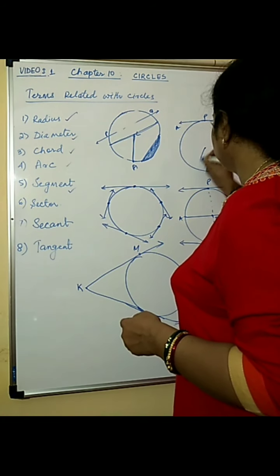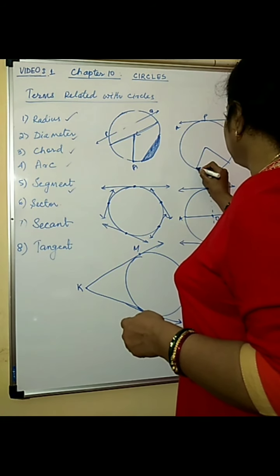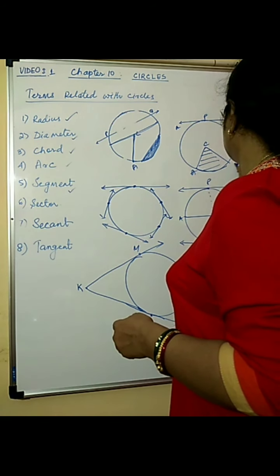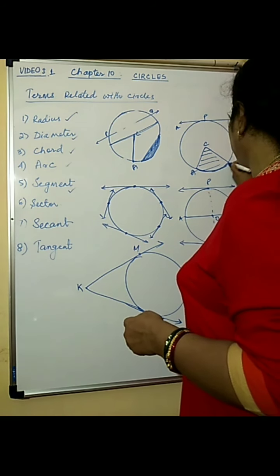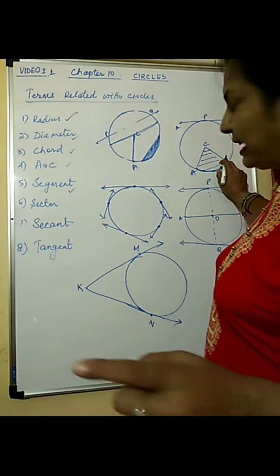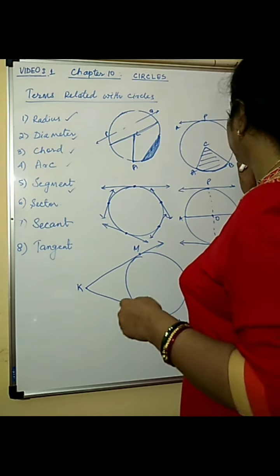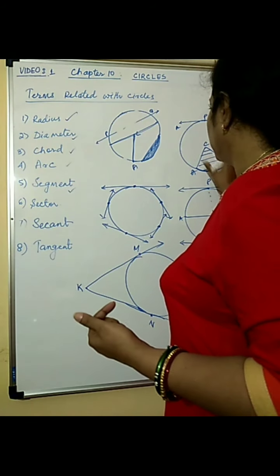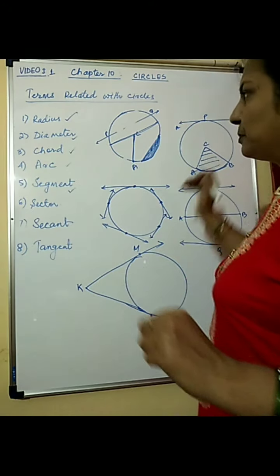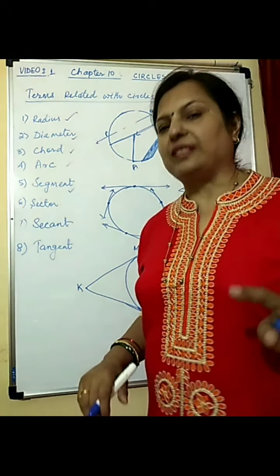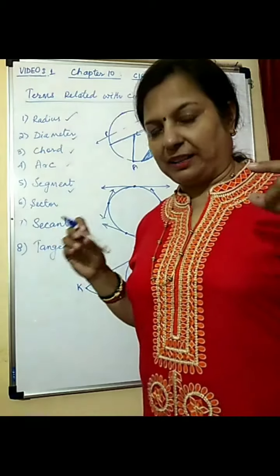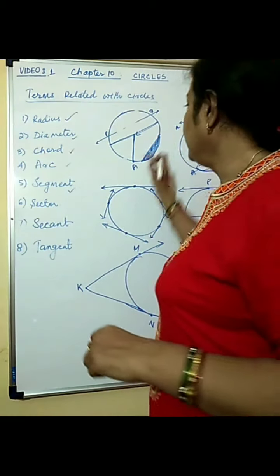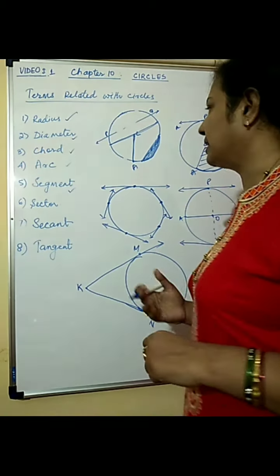Sector is the area between two radii and an arc. This is the centre, this is the arc — minor arc AB. So this is the area of the minor sector. If I take APB, that will be the major sector. So there are two sectors in a circle: one is major, another is minor. Similarly, there are two segments in a circle: one is minor, and the part of the area that contains the centre is called the major segment.